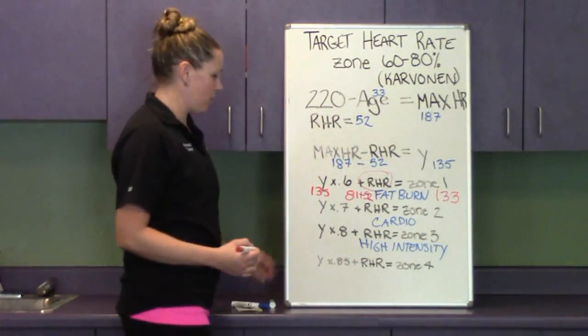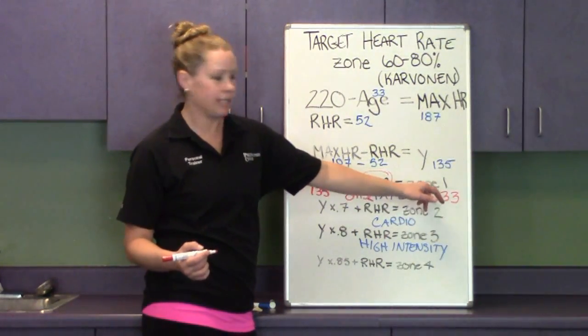So my first zone, 60% of my maximum heart rate is 133.